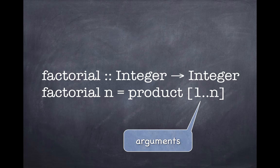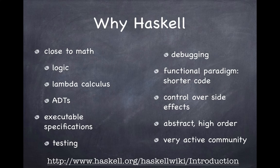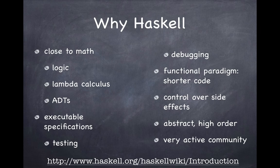This is a complete specification and it's executable — you can calculate factorials up to very high values. So why are we using Haskell? It's very close to mathematical notation, we can map logical formulas directly to it, we can use lambda calculus and abstract data types, and we can use it as an executable specification. We can run it, test it, debug it, do model checking, validation, and verification. Being functional, it usually yields shorter code, making it easier to read and reason about. You also have control over side effects, and higher-order functions mean functions can take other functions as arguments.